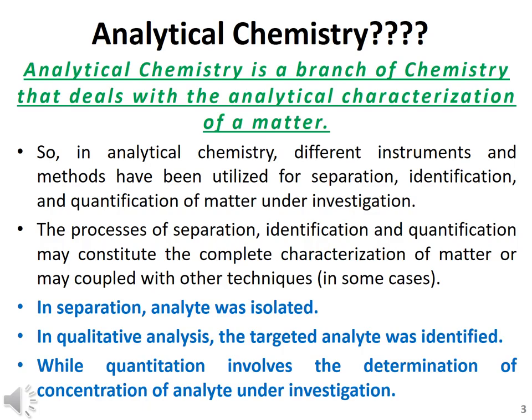These processes of separation, identification, and quantification may constitute the whole characterization of matter, or these processes may be coupled with other techniques when required. In analytical chemistry, when characterizing a sample, two or three basic processes are involved. The first one is the isolation of the targeted analyte — a class or group of compound is isolated from the sample.